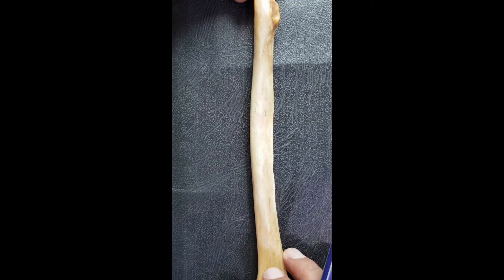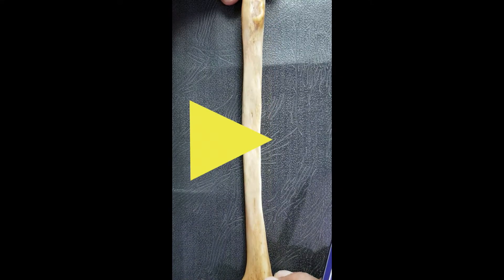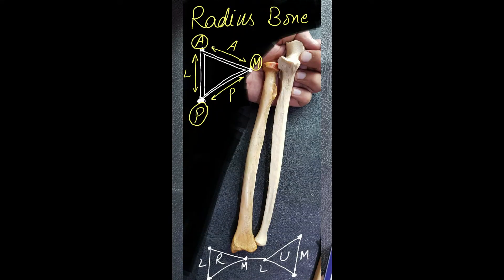Now the shaft of the radius bone. The shaft is triangular in cross-section and it has got three borders and three surfaces. The borders are the medial border, anterior, and posterior borders. The surfaces are the lateral surface, anterior, and posterior surfaces. I will first trace the borders and then we can easily mark the surfaces.